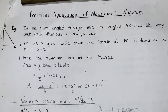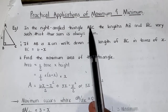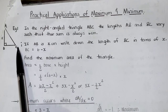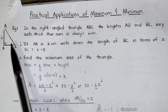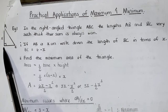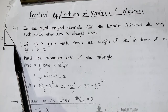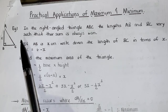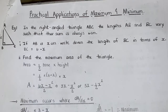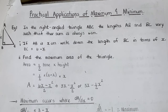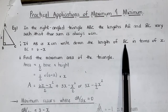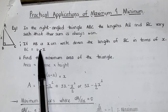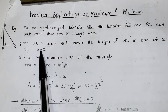Let's begin with a question. In the right-angled triangle ABC, the lengths AB and BC vary such that their sum is always 6 cm. If AB is X cm, write down the length of BC in terms of X. The question said that no matter the length of AB and BC, their sum is always going to be 6 cm. So, therefore, for the length of BC, an expression will be 6 minus the length of AB, which is 6 minus X.